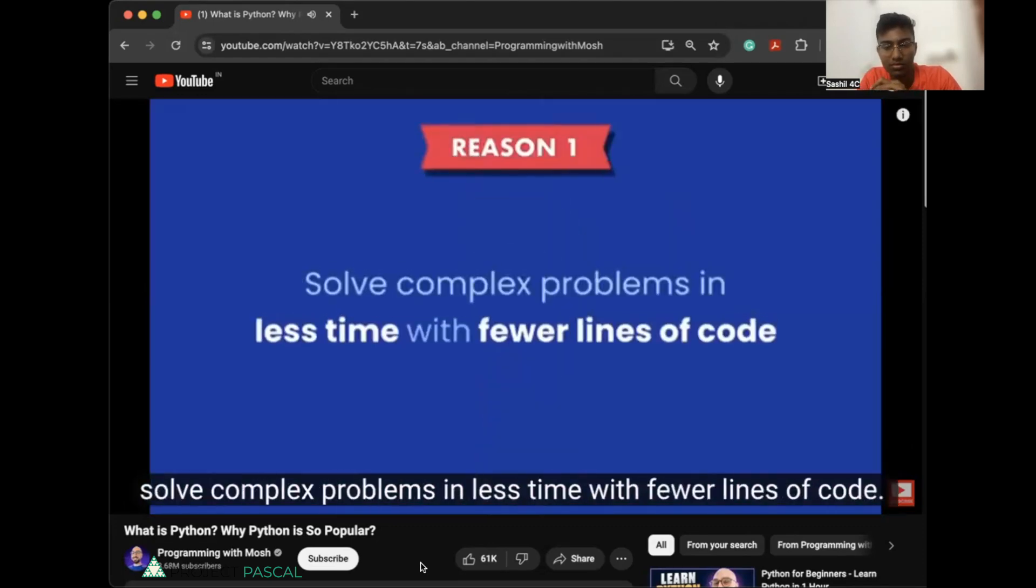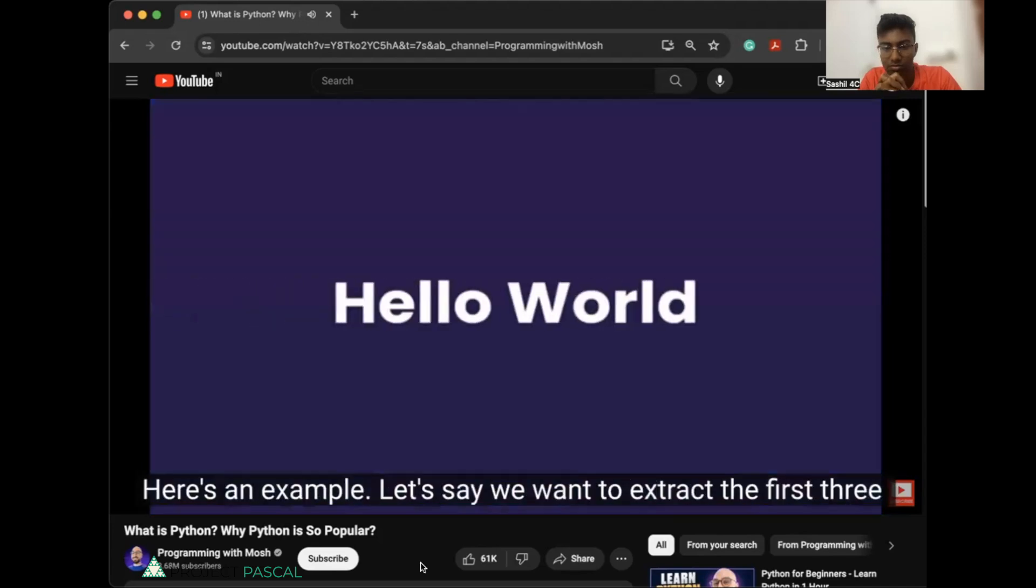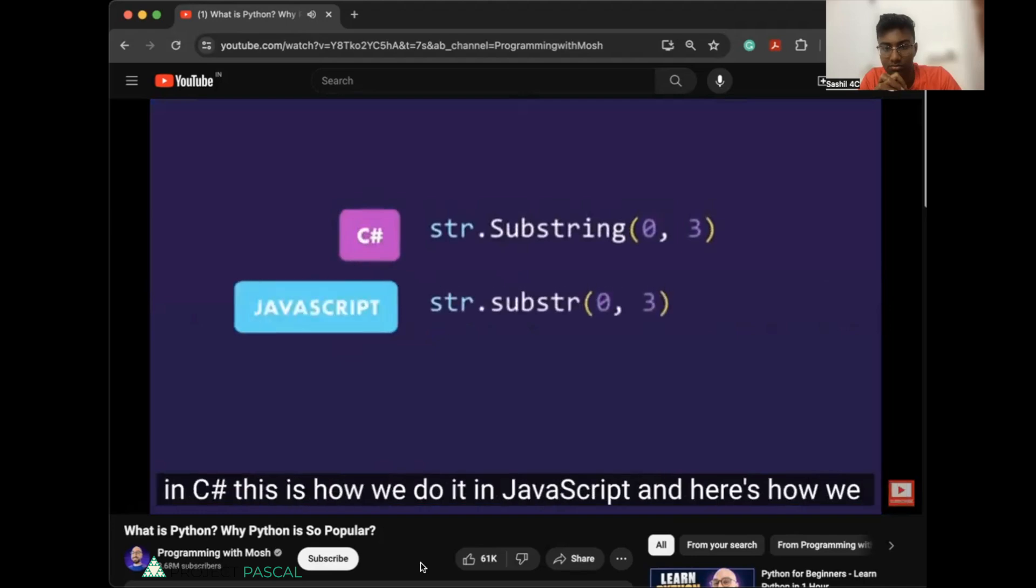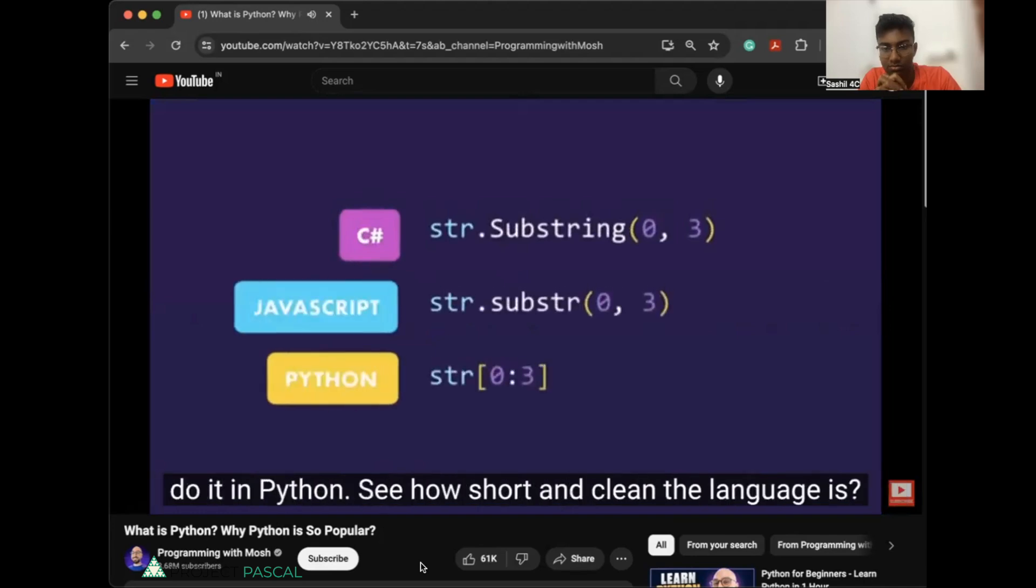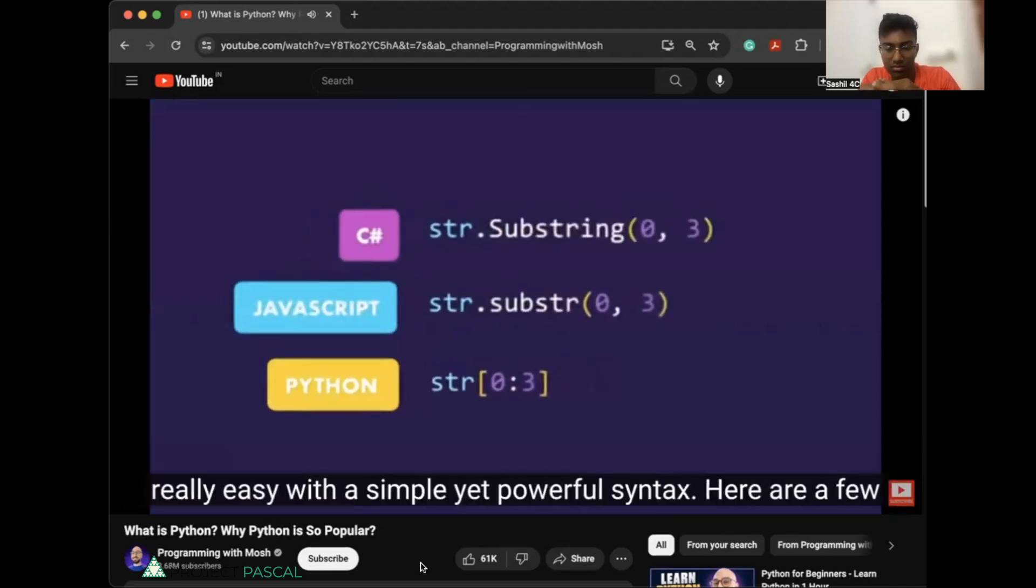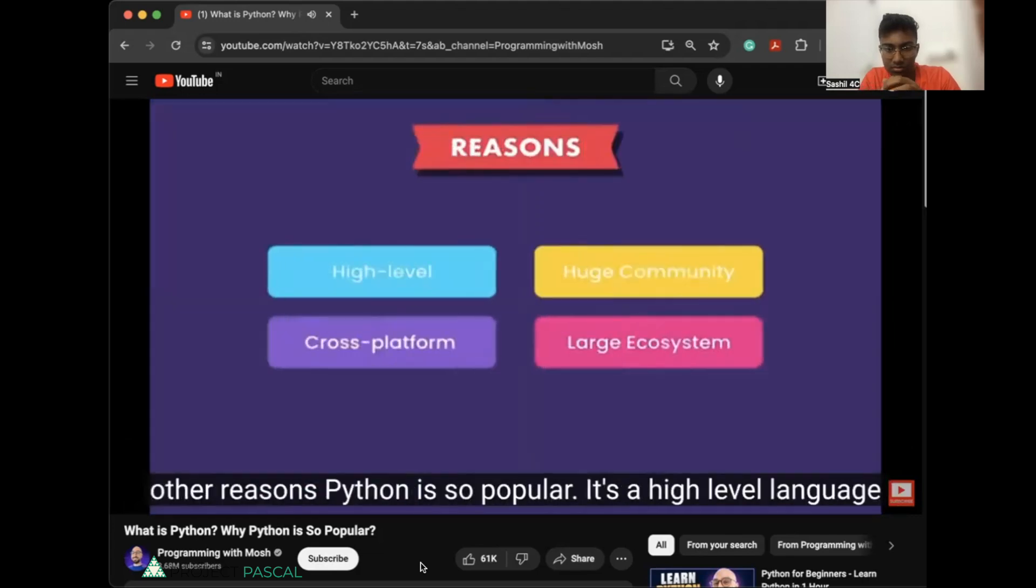With Python, you can solve complex problems in less time with fewer lines of code. Here's an example. Let's say we want to extract the first three letters of the text, hello world. This is the code we have to write in C-sharp. This is how we do it in JavaScript. And here's how we do it in Python. See how short and clean the language is? And that's just the beginning. Python makes a lot of trivial things really easy, but it's simple yet powerful syntax.